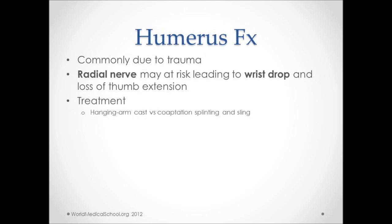A humerus fracture is commonly due to trauma. The radial nerve may be at risk and may manifest as a wrist drop and a loss of thumb extension. Treatment is a hanging arm cast or a coaptation splinting and sling.